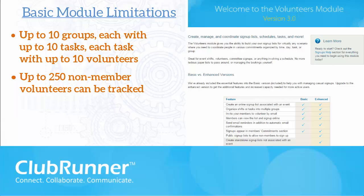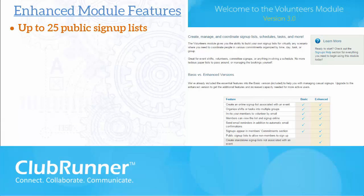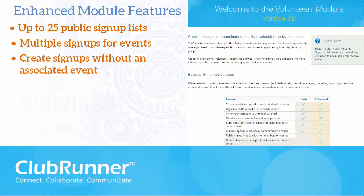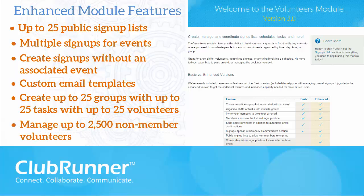The enhanced version of the volunteer module encompasses all the functions of the basic version with a number of extra features. You can create public signups that allow non-members to volunteer. You can also create multiple signups for the same event, or create signups that are not associated with an event, allowing you to manage volunteers for ongoing tasks. With the enhanced version you may also create custom email templates, and create up to 25 groups, each with up to 25 tasks, each of which may have up to 25 volunteers assigned. You are also able to manage as many as 2,500 non-member volunteers for all signup lists.